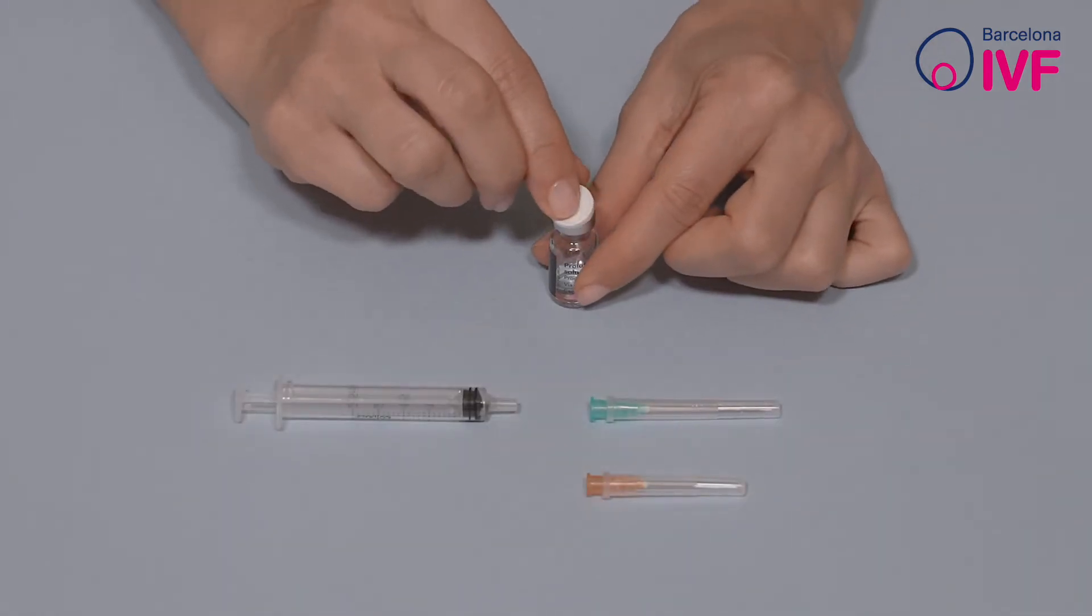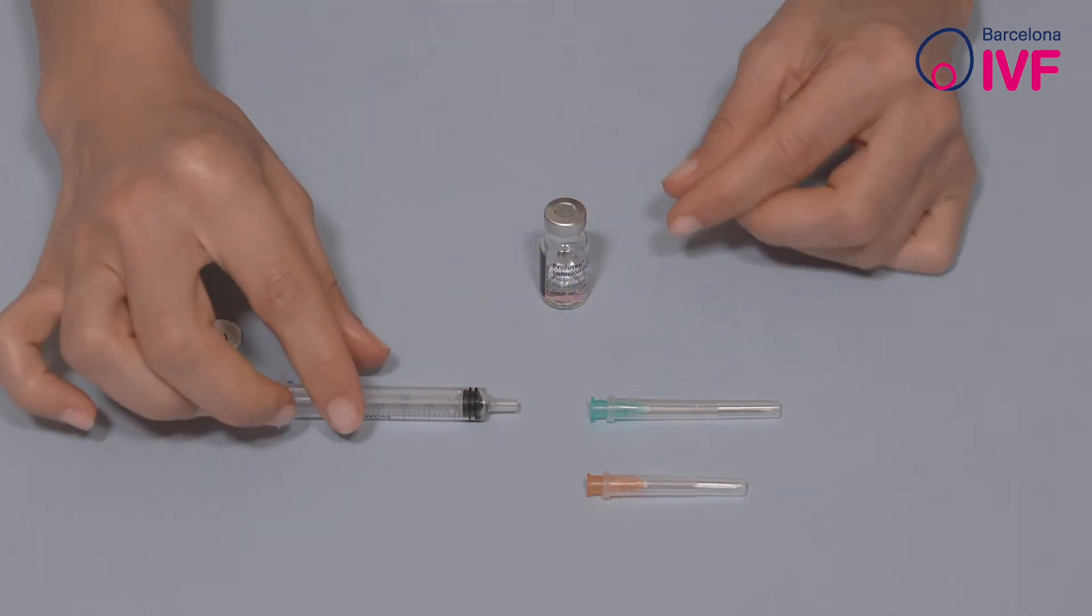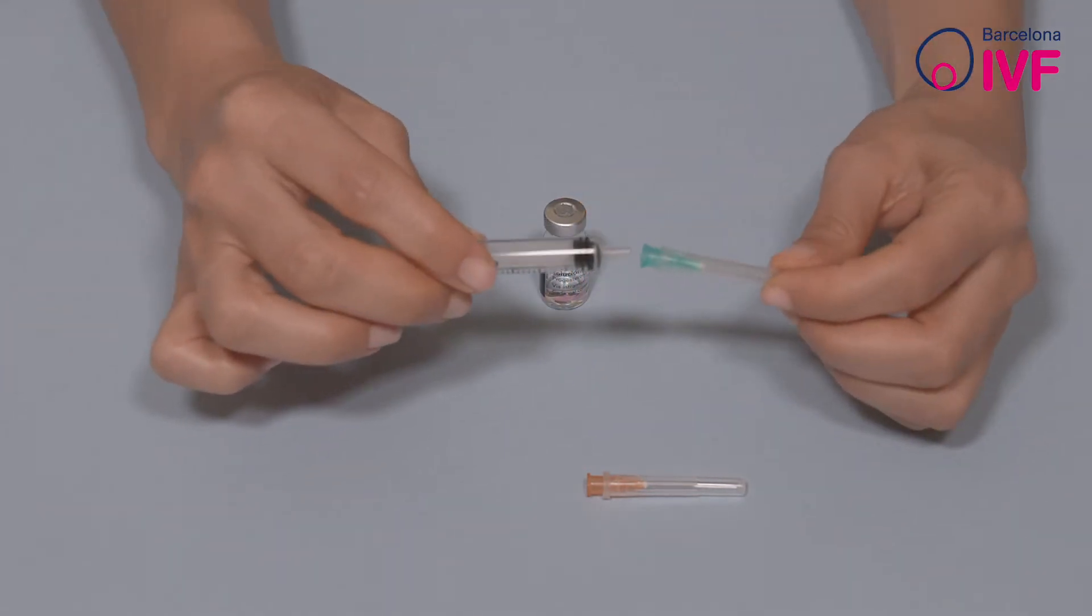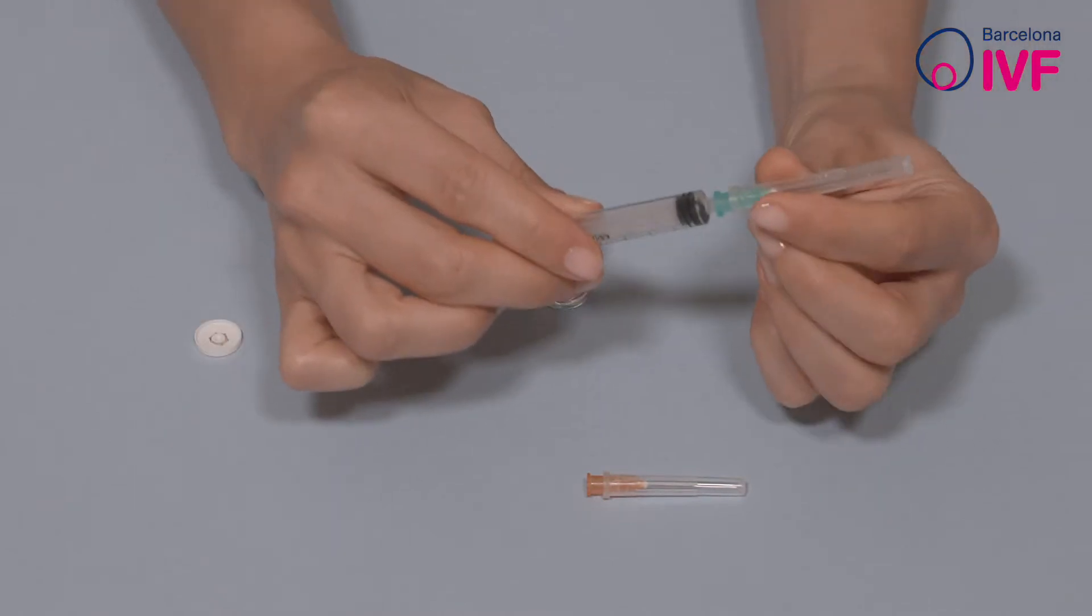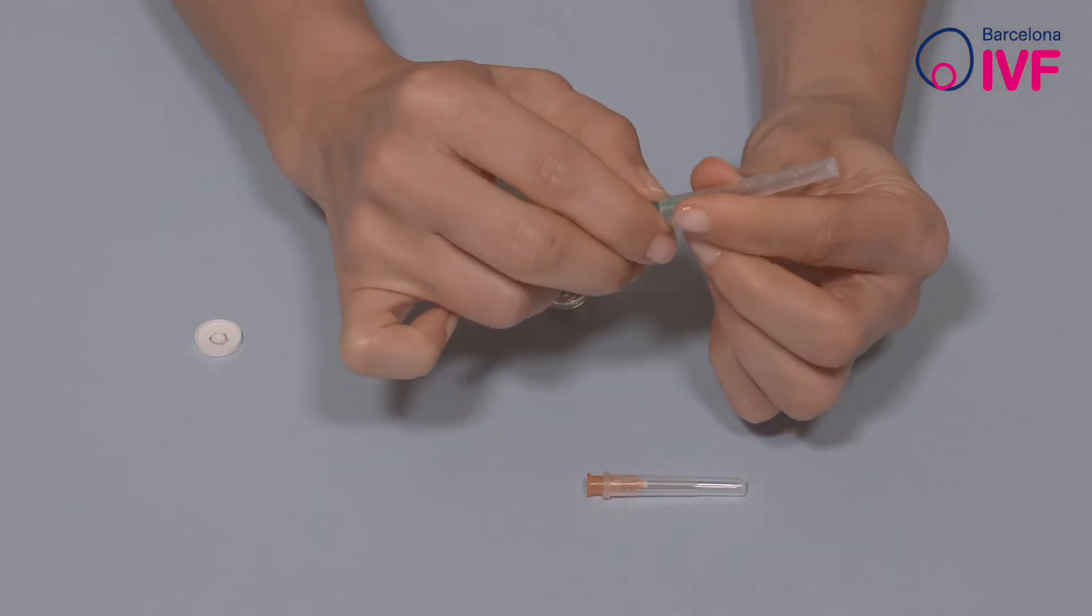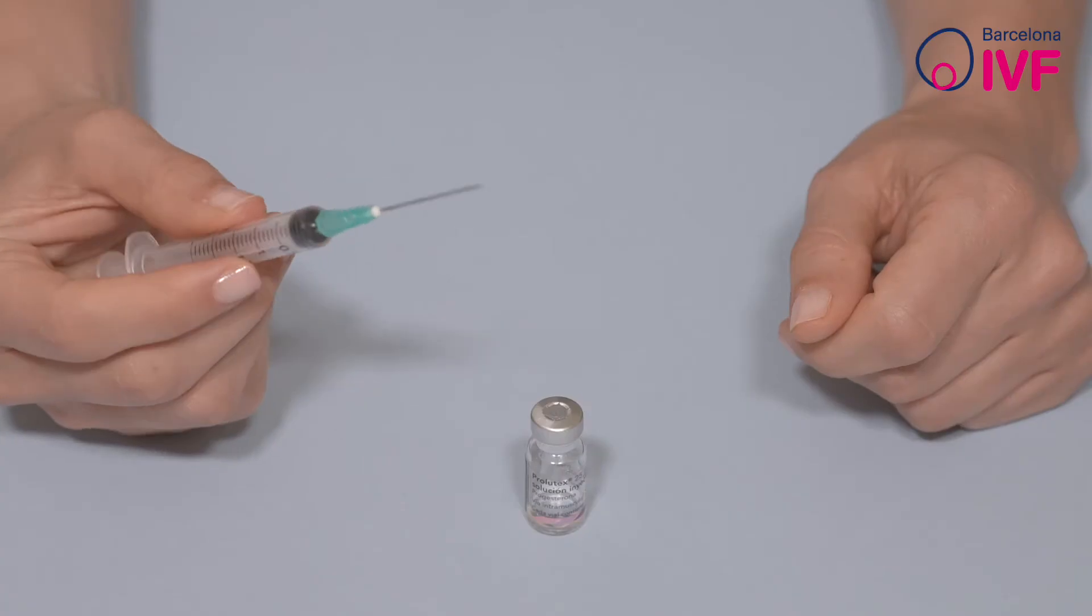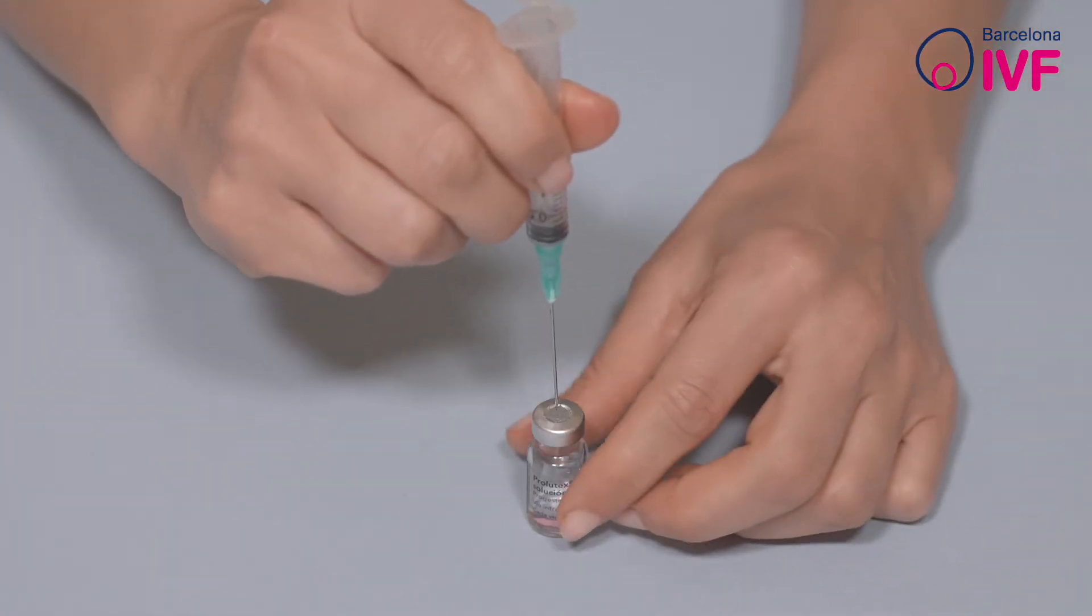Remove the cap from the vial. Attach the intramuscular needle to the syringe. Remove the guard from the needle and insert it into the vial of medication. Be sure the vial is resting on the table and your movements are as vertical as possible.